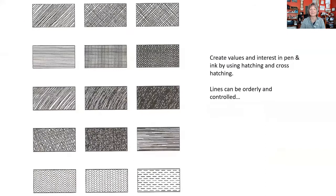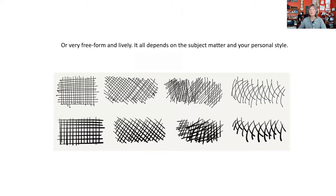When you want to create values with ink, you don't have the option of smudging and blending. You have to create values using hatching and cross-hatching. This shows a very orderly set of cross-hatching types — you can make patterns any different way. In a pen and ink drawing you want variety: variety in textures and values. You can either do very orderly and controlled lines or very freeform — it kind of depends on your personality. If I'm sketching a scene in place, my lines end up much less orderly.